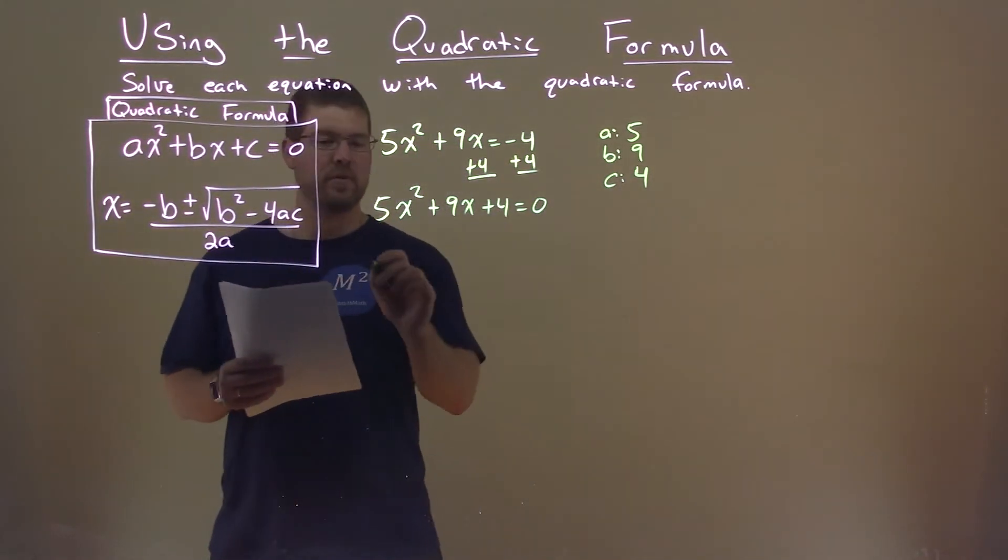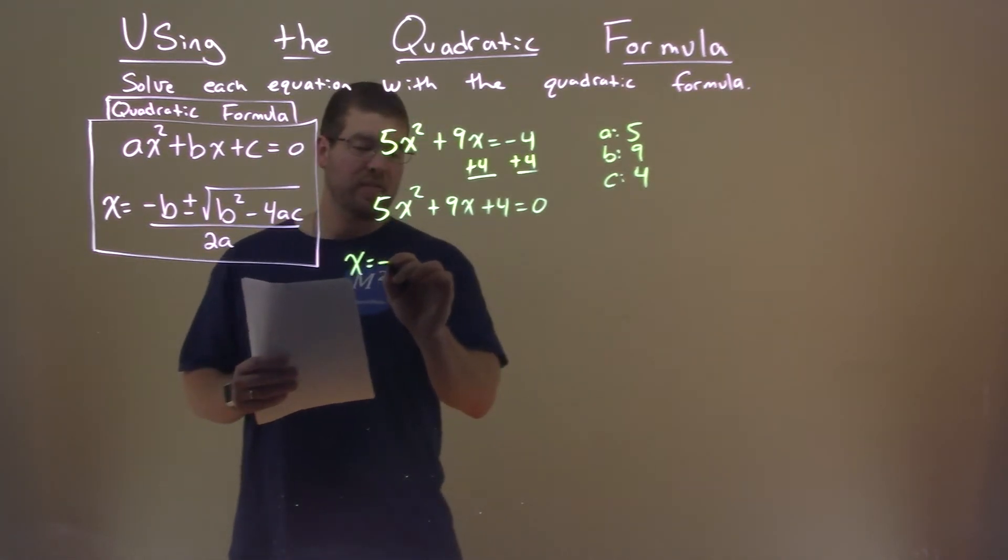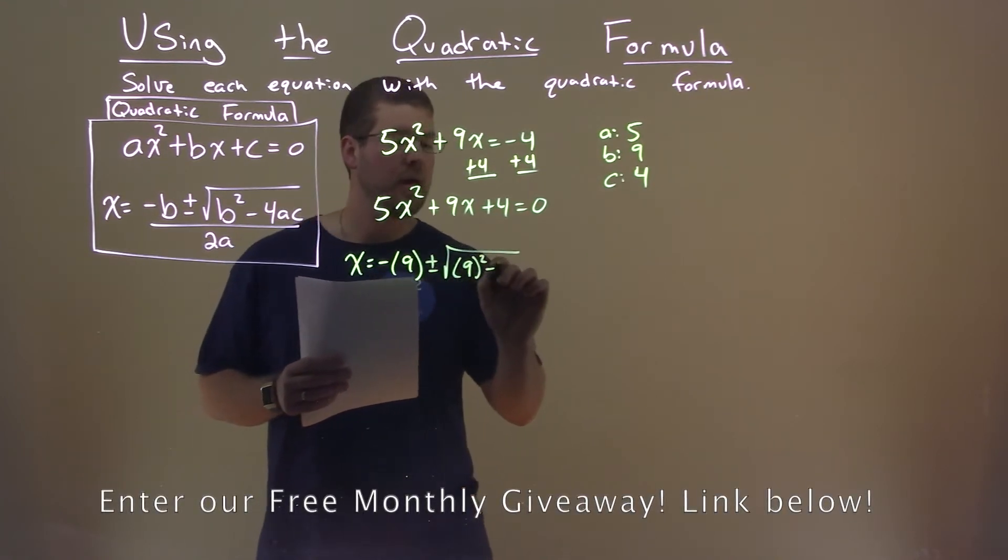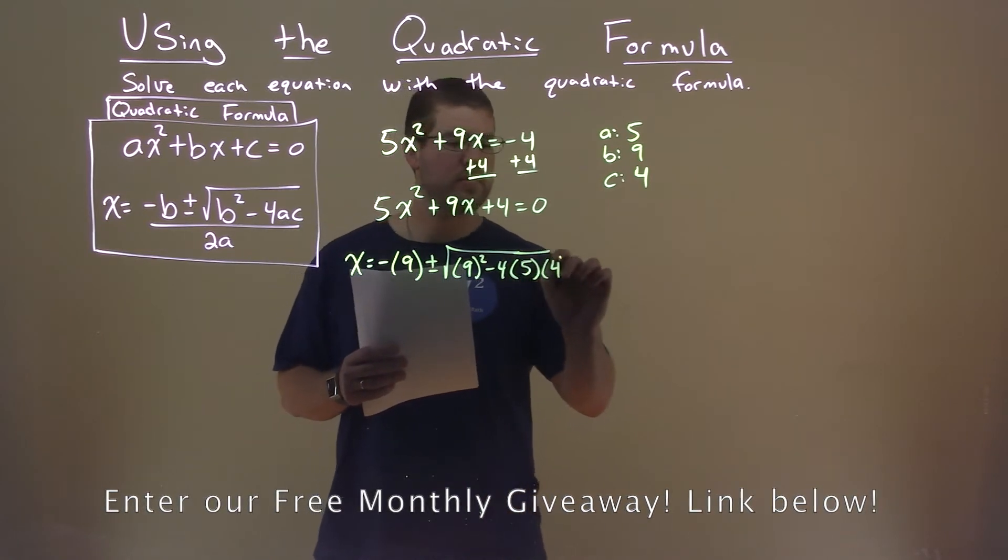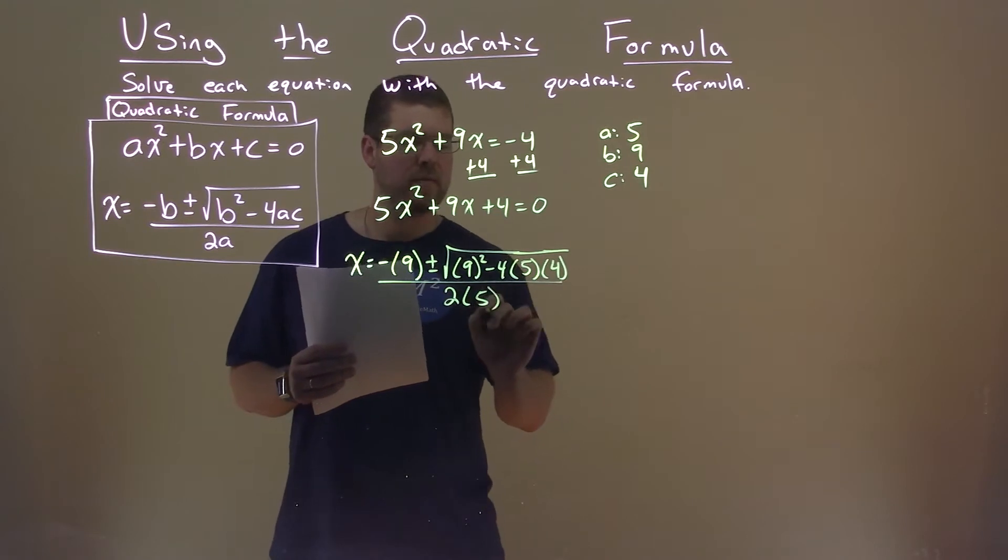So now we can use that with our quadratic formula. x equals negative b, so minus 9, plus or minus the square root of b squared, 9 squared, minus 4 times a, which is 5, times c, which is 4, all over 2 times a, which is 5.